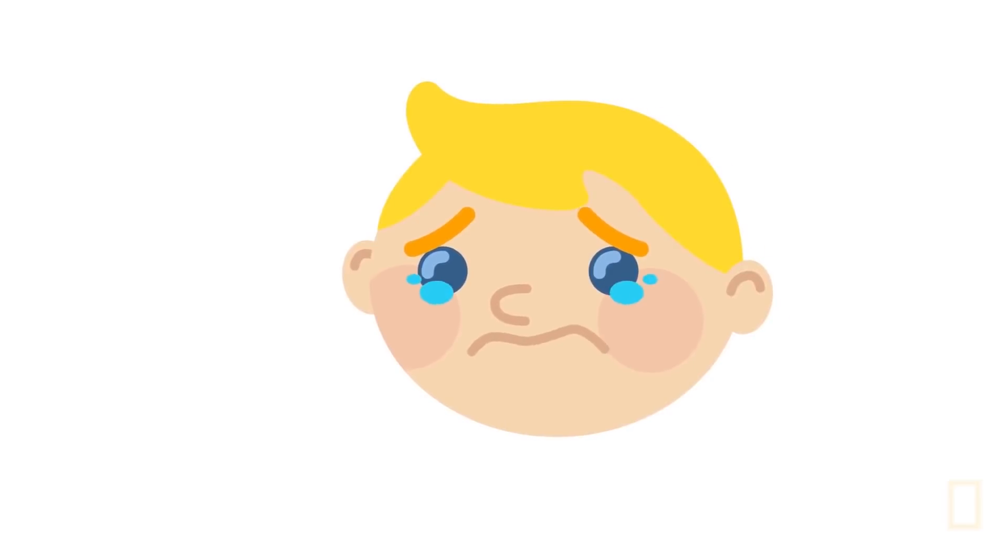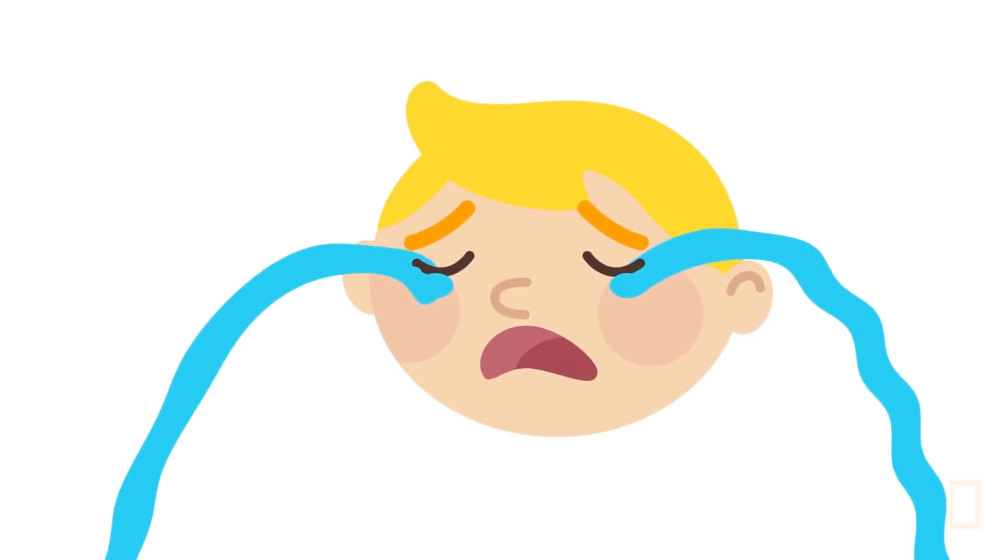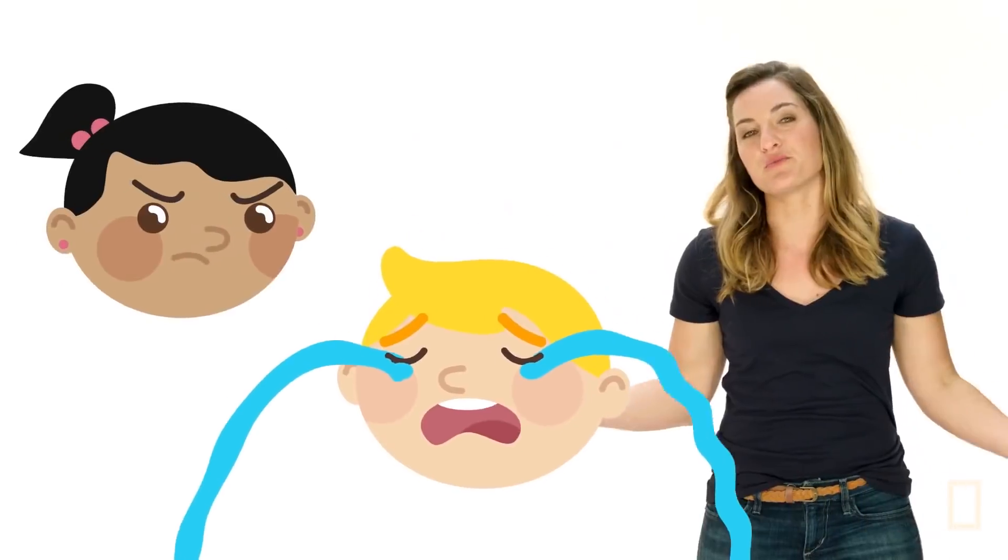So we might cry to connect with other humans. But there are other science folks out there, and one suggests that our tears are more about manipulation. When we're young, we realize crying has a powerful effect, and it neutralizes other people's anger.